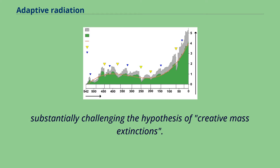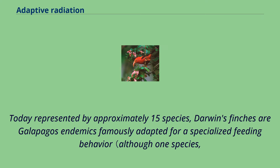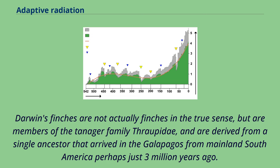Darwin's finches are an often-used textbook example of adaptive radiation. Today represented by approximately 15 species, Darwin's finches are Galapagos endemics famously adapted for specialized feeding behavior, although one species — the Cocos finch — is not found in the Galapagos but on the island of Cocos south of Costa Rica. Darwin's finches are not actually finches in the true sense, but are members of the tanager family Thraupidae, and are derived from a single ancestor that arrived in the Galapagos from mainland South America perhaps just three million years ago.